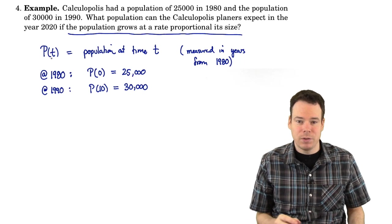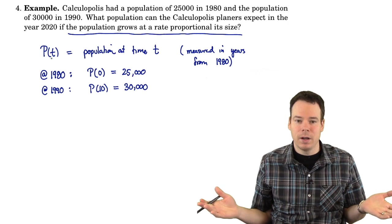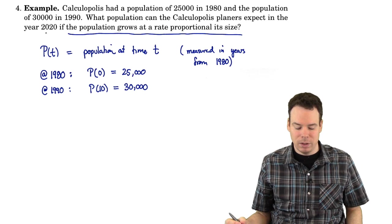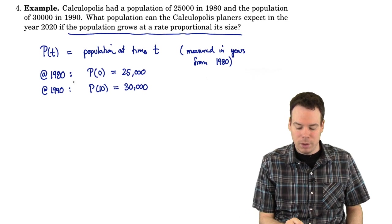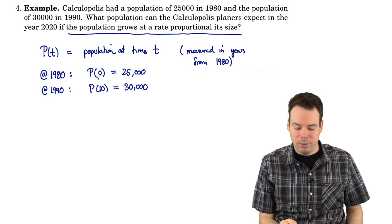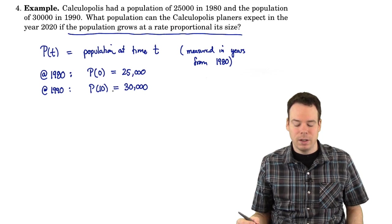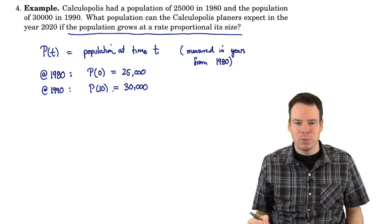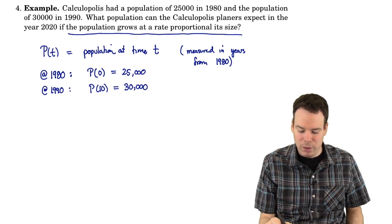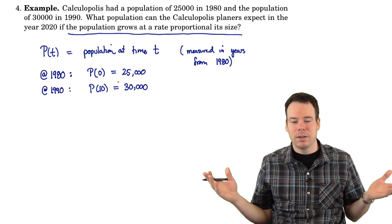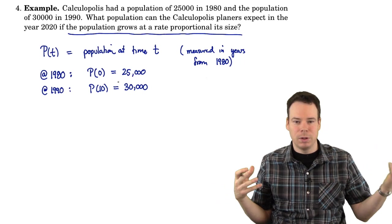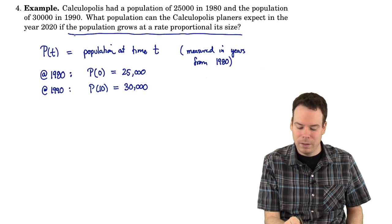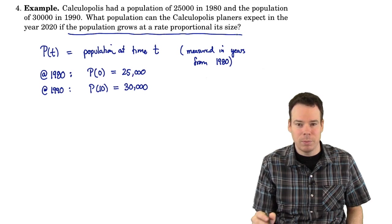So we have this population function which we're trying to find. We want to know what P of t is for any given t, if possible, and then use it to predict what happens at 2020. But all we know so far is that its value at zero is 25,000 and its value 10 years later is 30,000. But there is one more bit of information we know about P. Knowing just two points that the function satisfies does nothing to tell you what the function is. It could be linear, it could be quadratic, but there's some additional information that specifies what kind of function we should be considering.